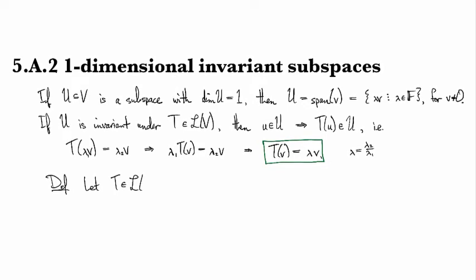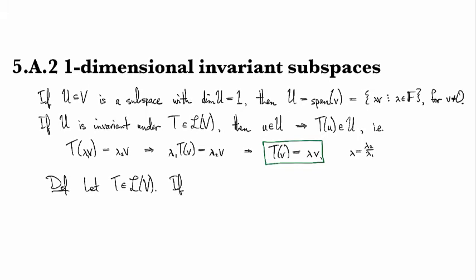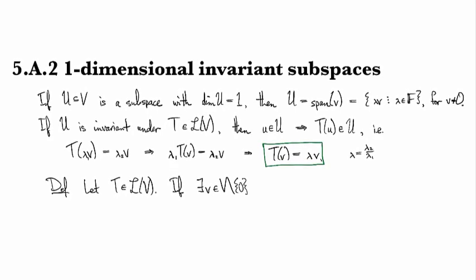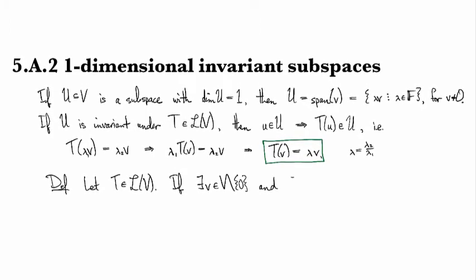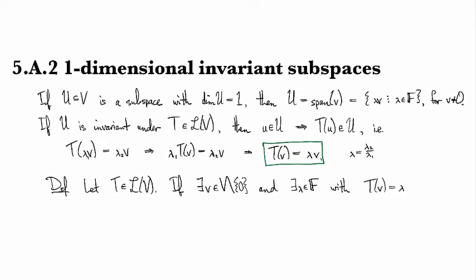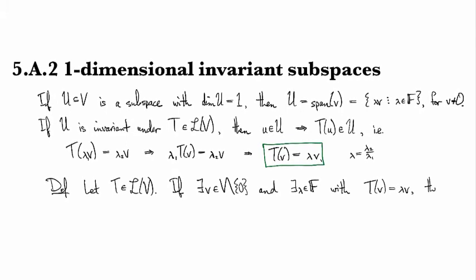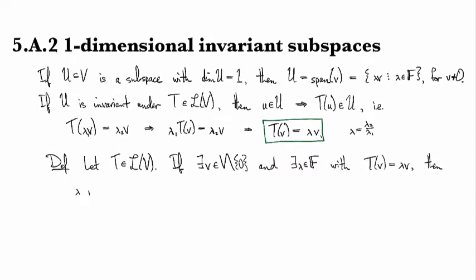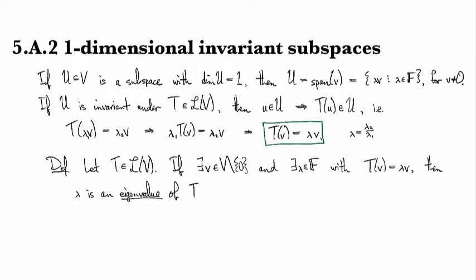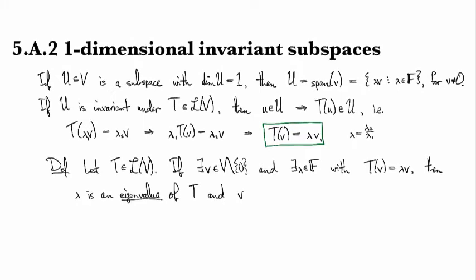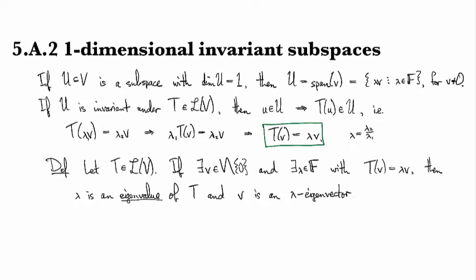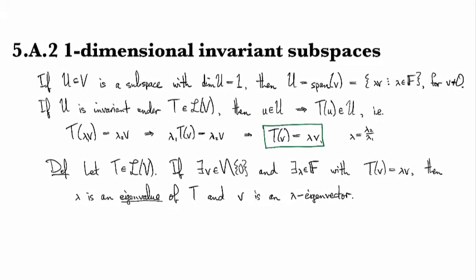Suppose we have an operator T. If there exists a nonzero element v of V and there exists some scalar λ such that T(v) equals lambda v, then we say that lambda is an eigenvalue of T, and that v is an eigenvector for lambda, or a lambda eigenvector. Quite often we'll just say eigenvector because it'll be clear from context which eigenvalue we're talking about.